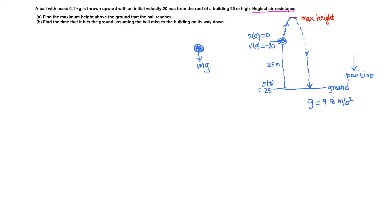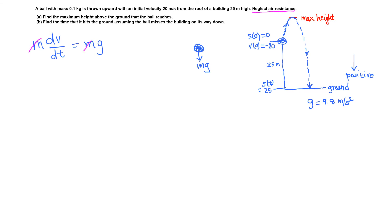The only force acting in this question is weight, which equals mass times acceleration due to gravity. By Newton's second law of motion, the resultant force F equals mass times acceleration, so m times dv/dt equals the weight mg. Dividing both sides by m, the m cancels, giving us the differential equation dv/dt equals g.